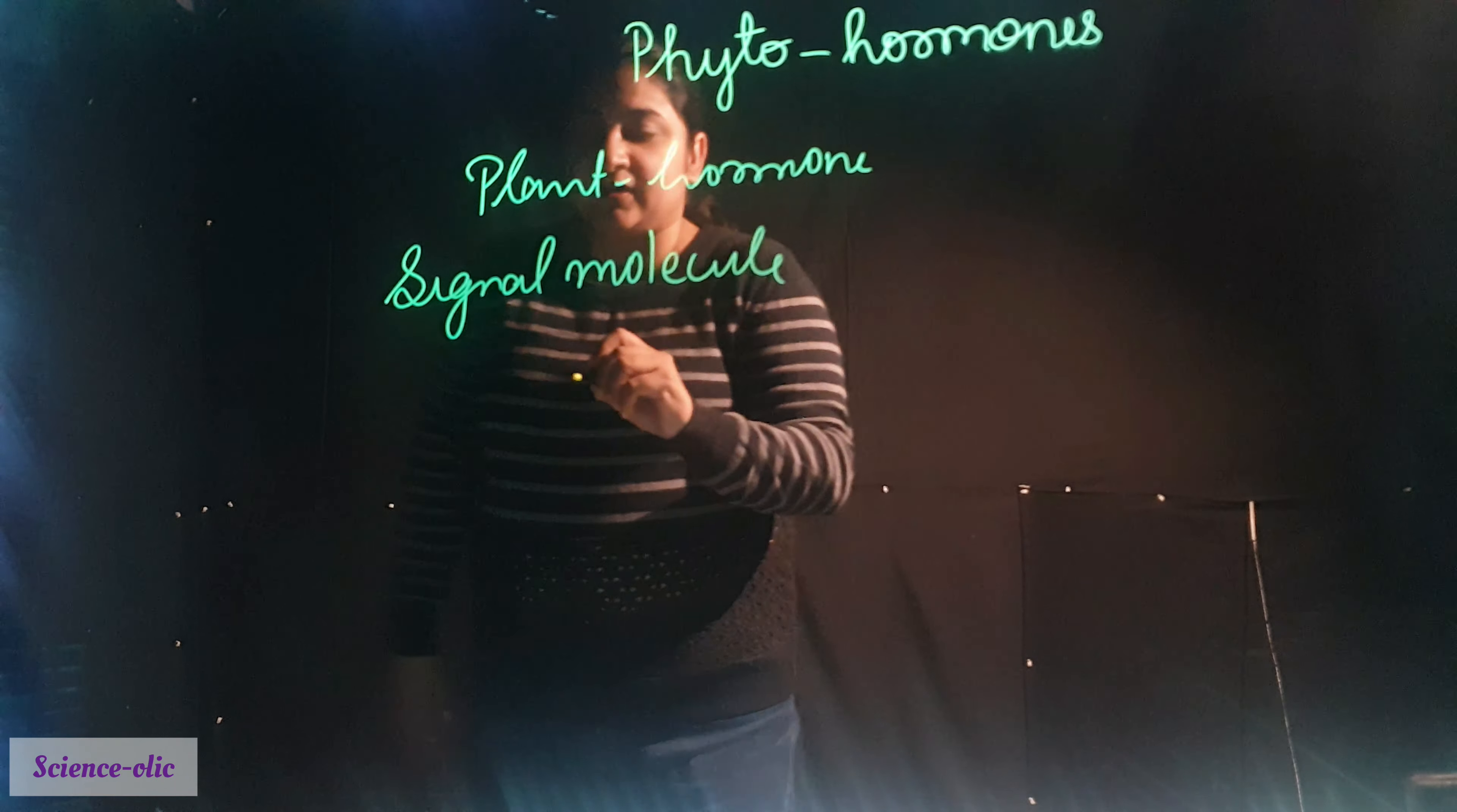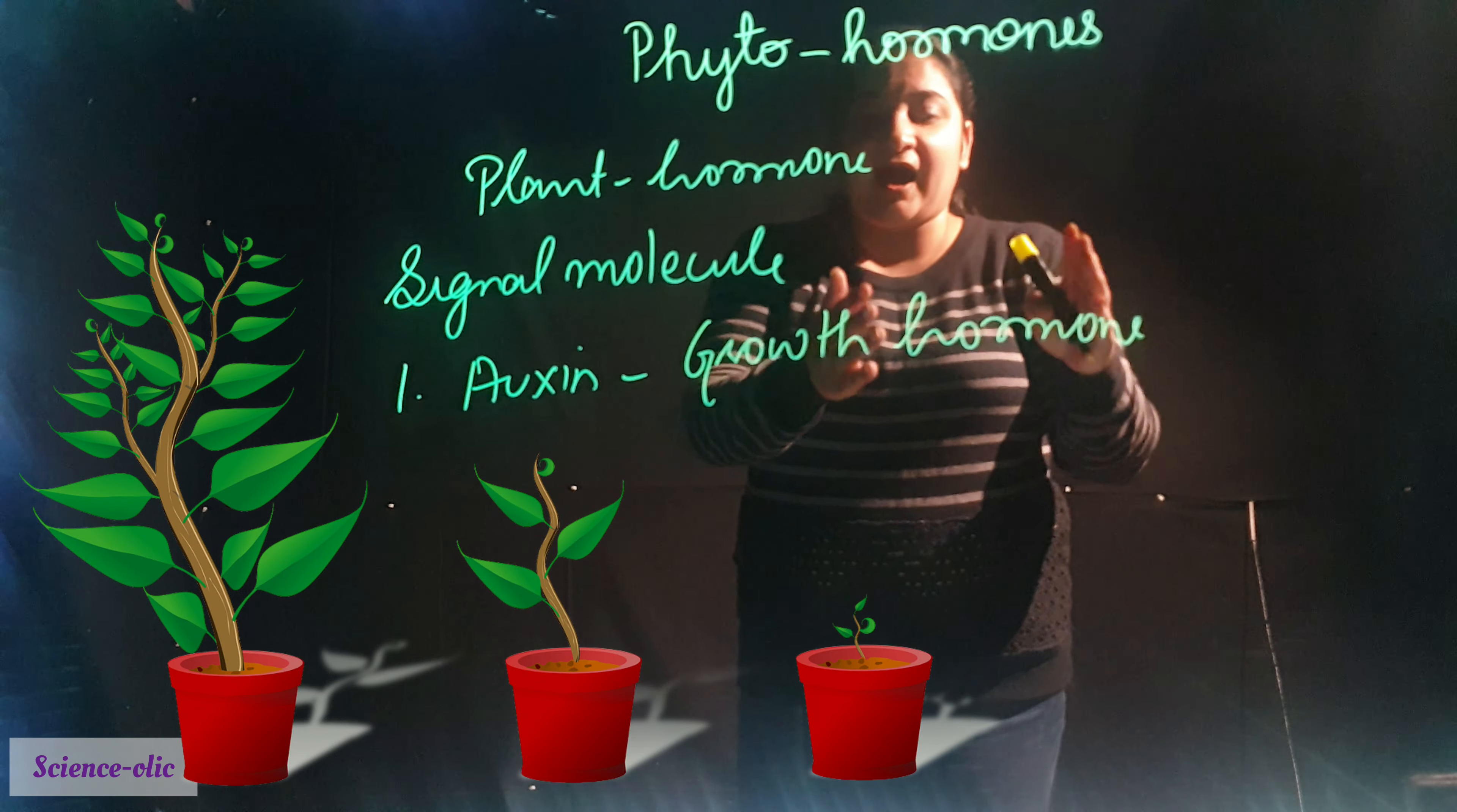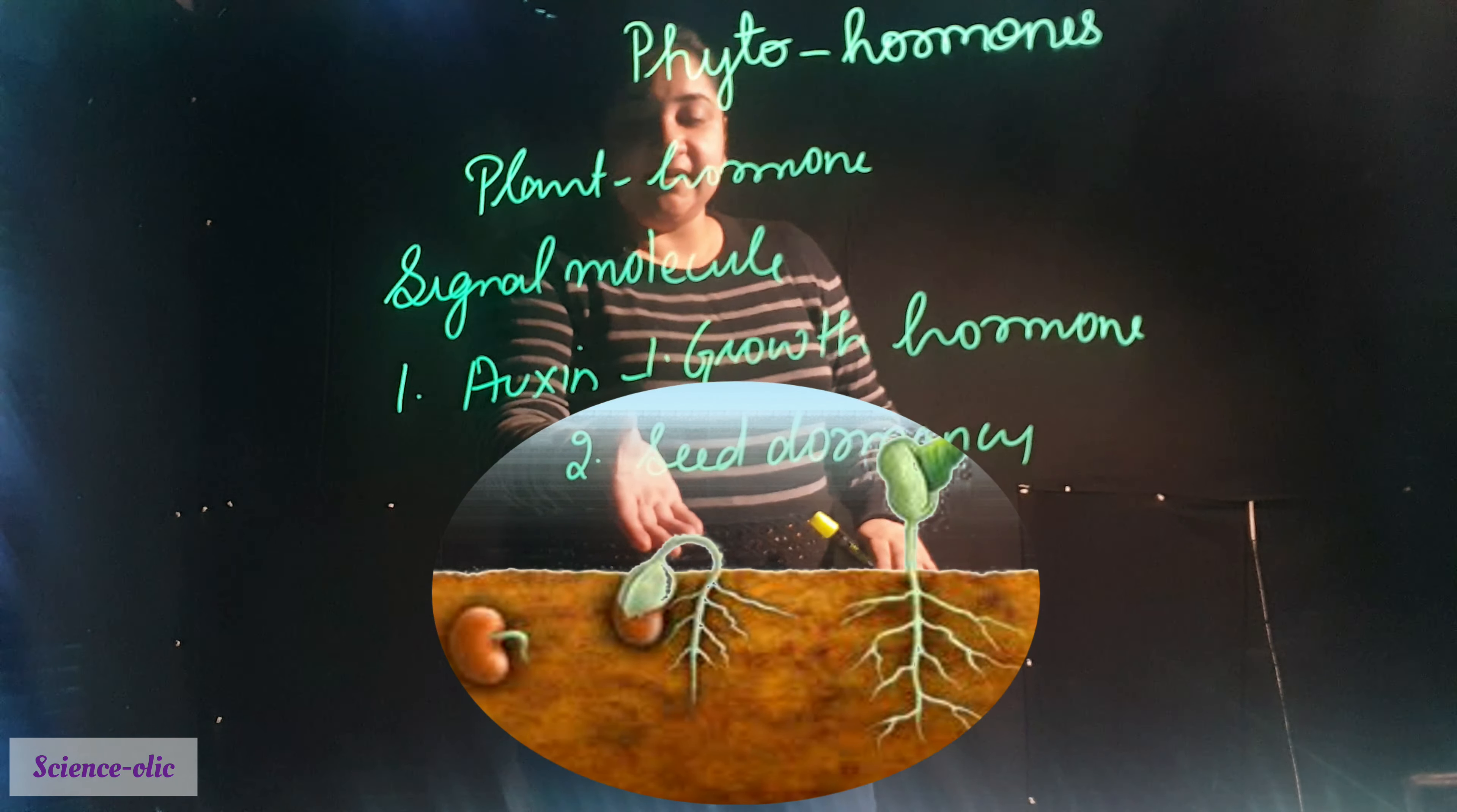Number one is auxin. This is also known as growth hormone. You might have seen that small plants grow to the larger trees. It helps with the hormones, the growth hormones. Auxin helps to grow. And it also breaks the seed dormancy. You might be wondering what is seed dormancy. Seed dormancy is when seed breaks and grows as saplings.